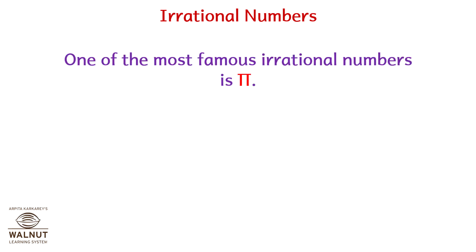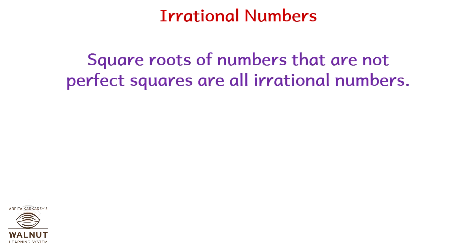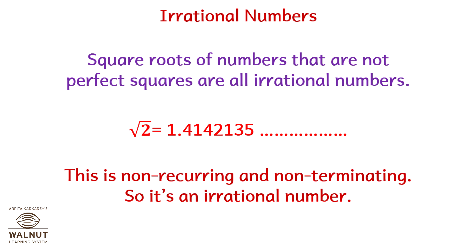One of the famous irrational numbers is pi. The fraction approximation is 22 upon 7. When written as a decimal it becomes 3.14159265358979323846... and so on. So it is an irrational number. Square roots of numbers that are not perfect squares are all irrational — root 2 is 1.4142135... and so on. This is non-recurring and non-terminating, so it is irrational.